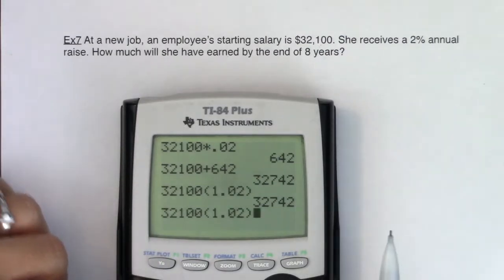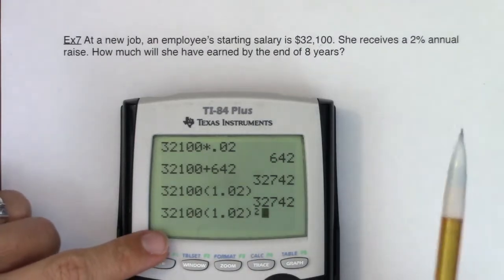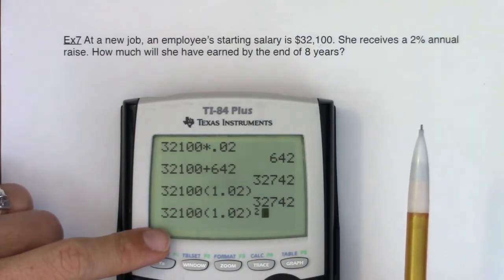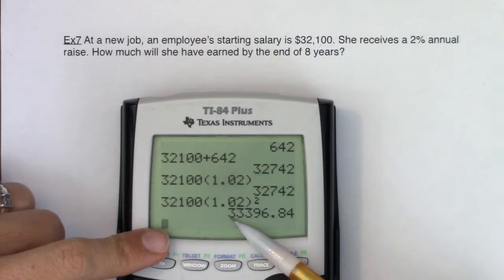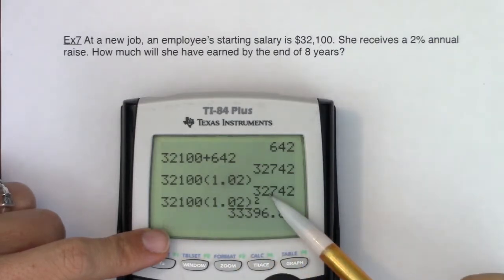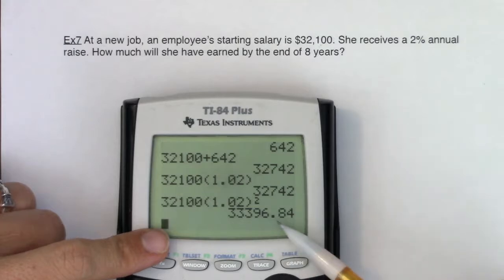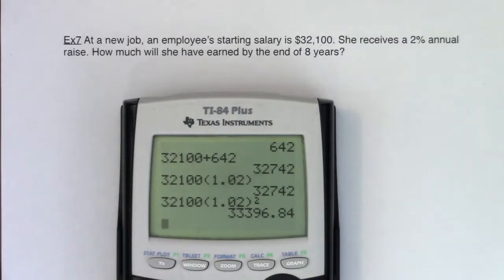If I wanted to see what she was getting her third year, I would square this number because this is how we build exponential growth. So for her third year, she started with $32,100. The next year she went to $32,742. And the third year she was making $33,396.84.